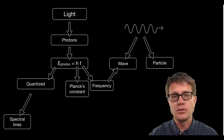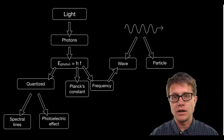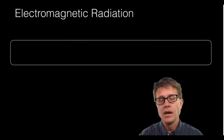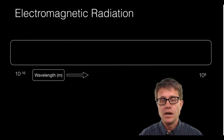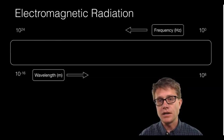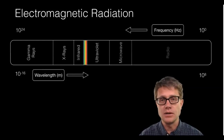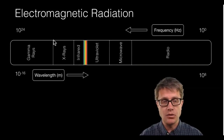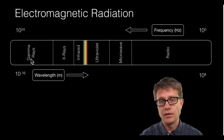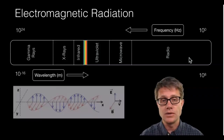Evidence came from spectral lines, both emission and absorption spectra, and then the photoelectric effect. Light is made up of electromagnetic radiation — we are just looking at one small bit of it. It goes from really small to long wavelengths, and inversely from really low to high frequency. An example of a wave with really high energy and high frequency would be gamma rays, which have a low wavelength. Radio waves have long wavelengths but really low frequency.